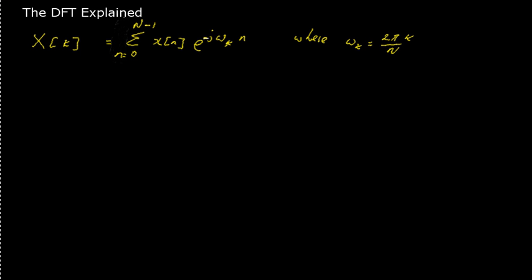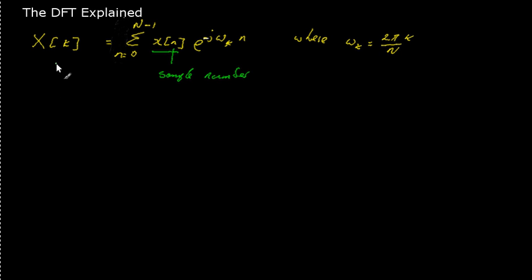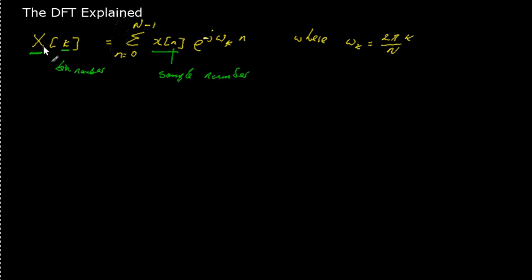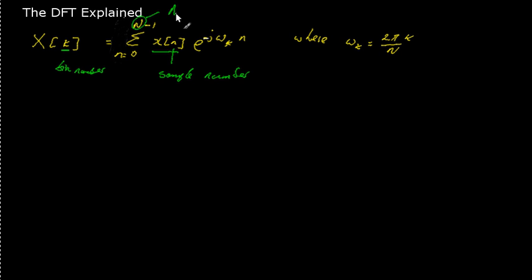I said I have a signal x of n that I'm analysing. There's a variable n which refers to the sample number — that's the index into the time-domain signal. I've also got this variable k, which is referred to as a bin number. That's the index into the sequence of complex values returned by the FFT. Capital X is just a placeholder for our frequency content, the same way as lowercase x is the placeholder for our time-domain content. I've also got a capital N variable, which refers to the number of samples — in our example, 20.